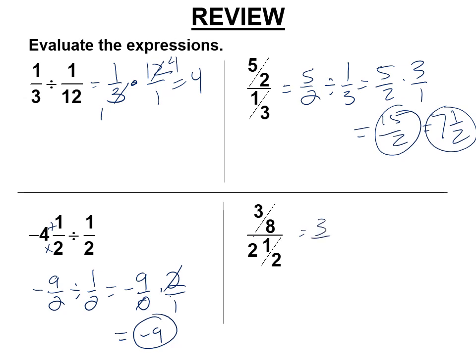This is 3 eighths divided by 2 and a half, which is 3 eighths. And then we can make that divided by 2 times 2 is 4, plus 1 is 5 halves. Multiply by the reciprocal, 2 fifths. Cancel the 2 and the 8, and I'm getting 3 twentieths.